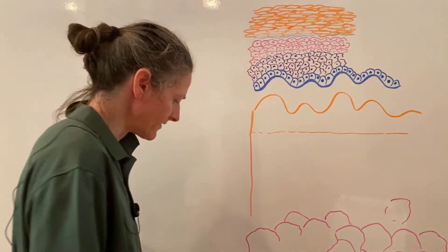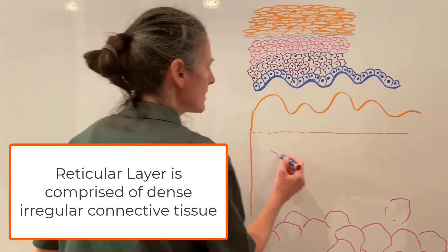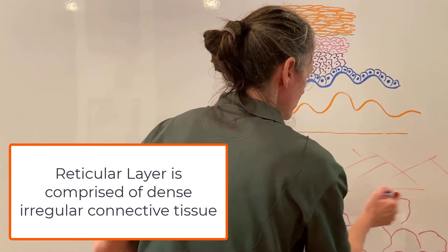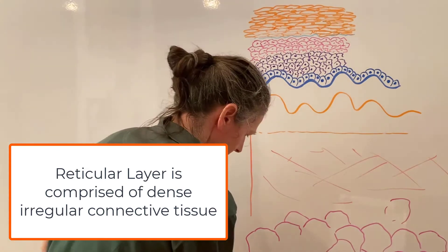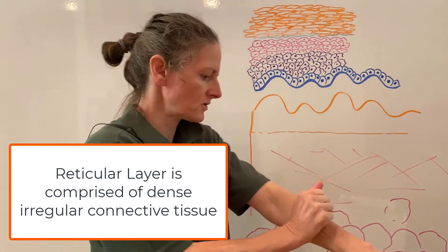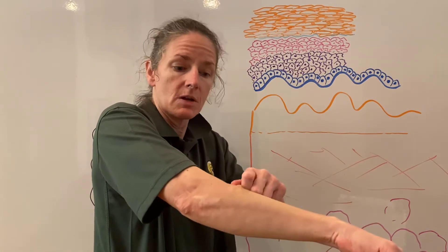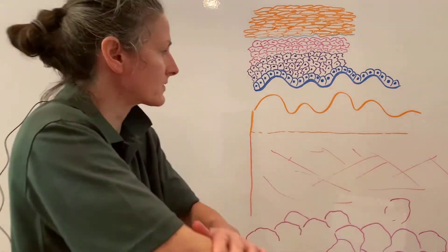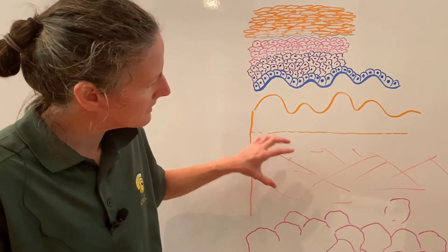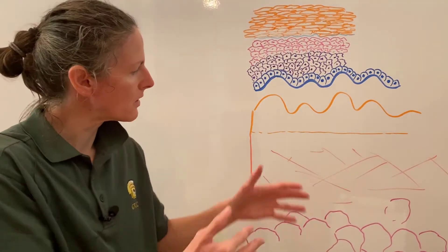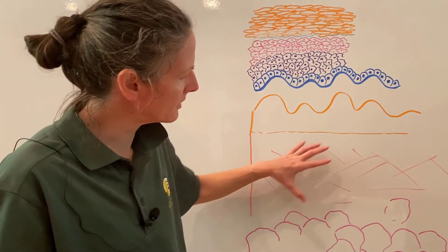Below the papillary layer is the reticular layer, characterized by dense irregular connective tissue. It's stronger and provides cross-woven resistance to tension and torsion in multiple directions, so you can pick up and twist your skin without causing damage, thanks to these irregularly woven fibrous proteins.